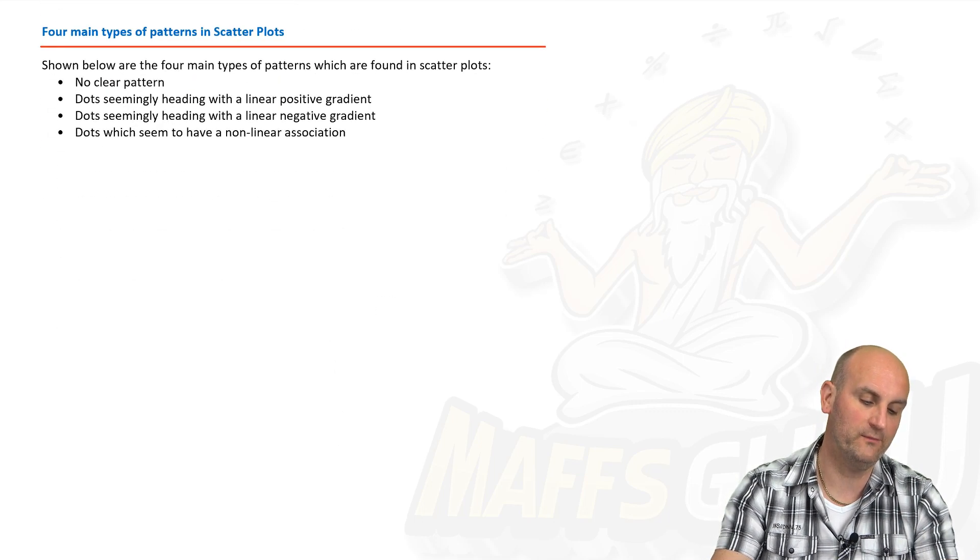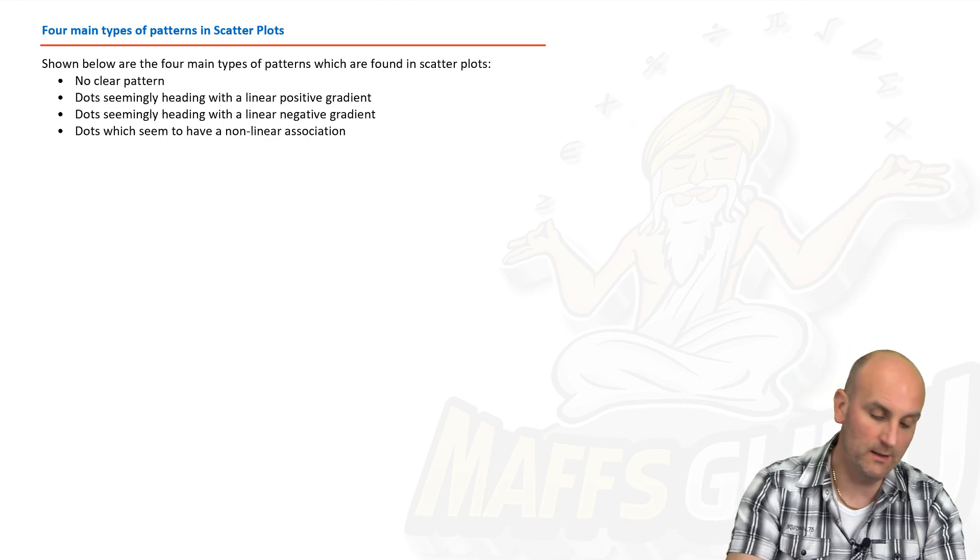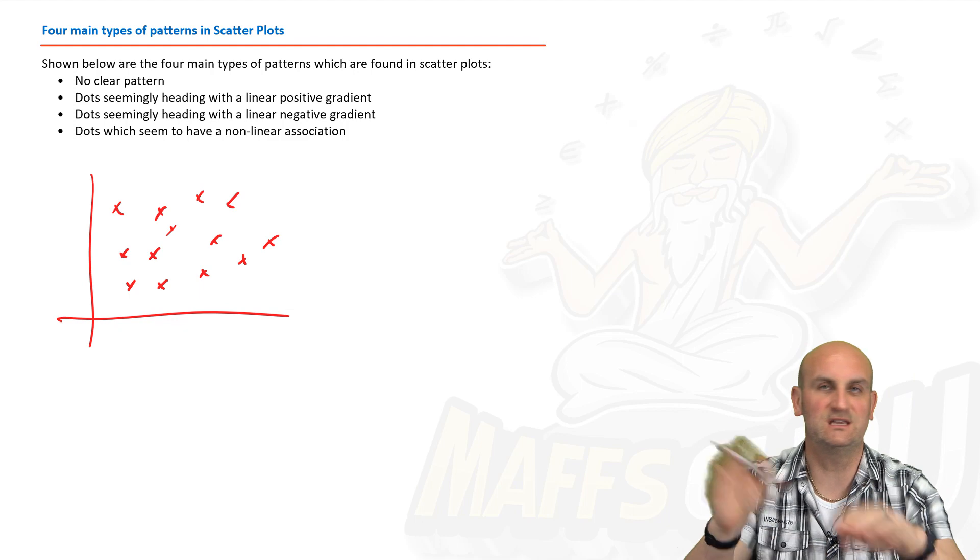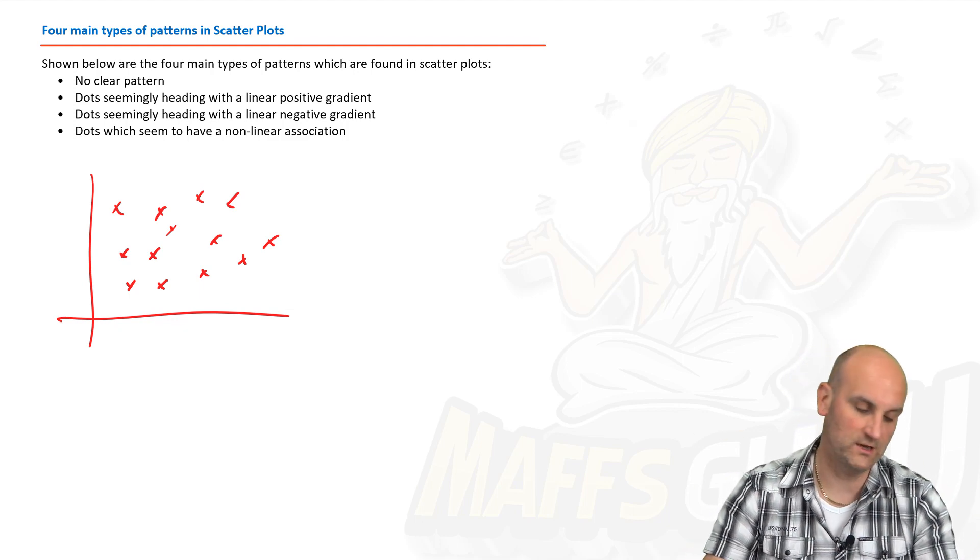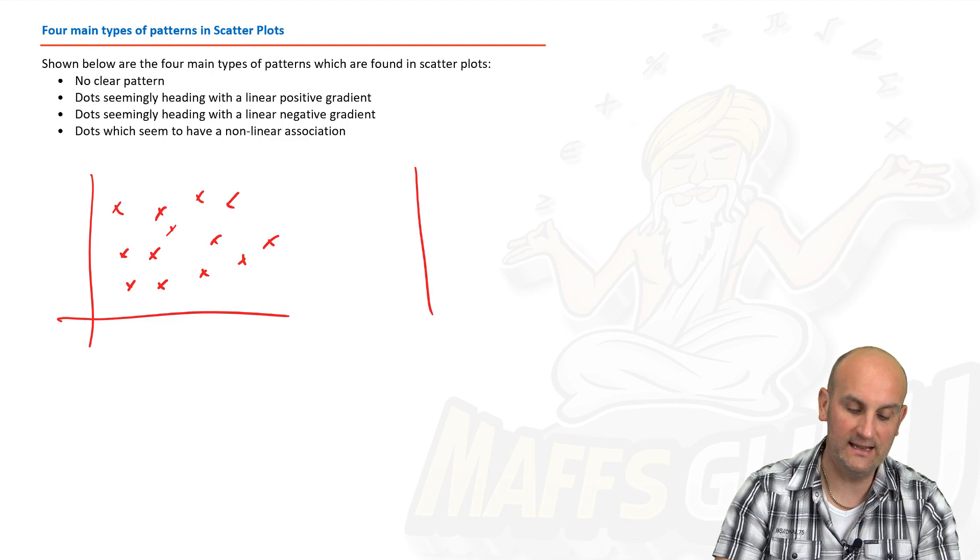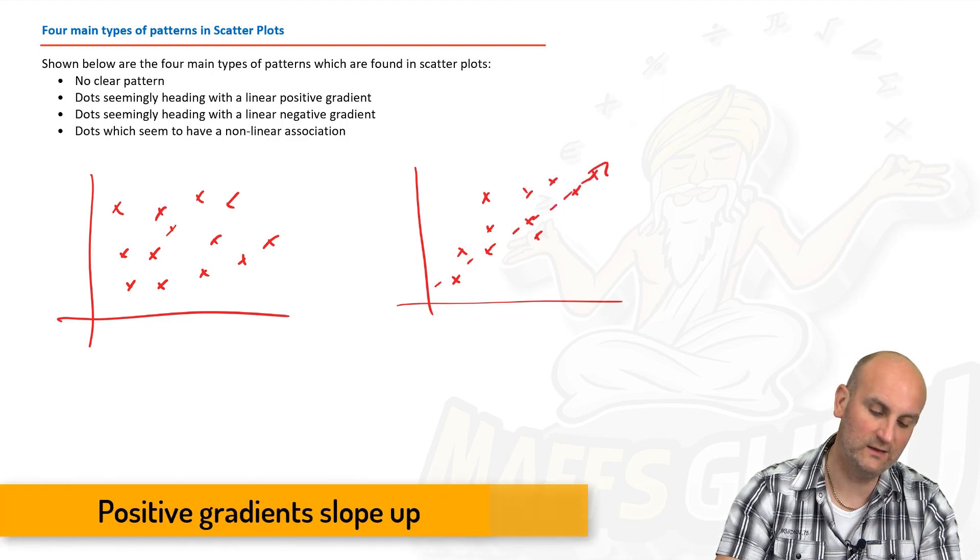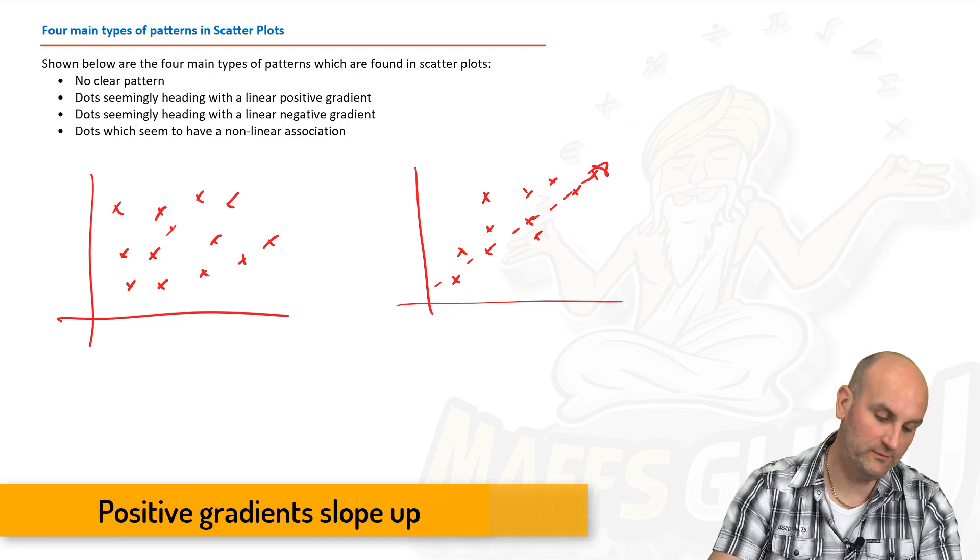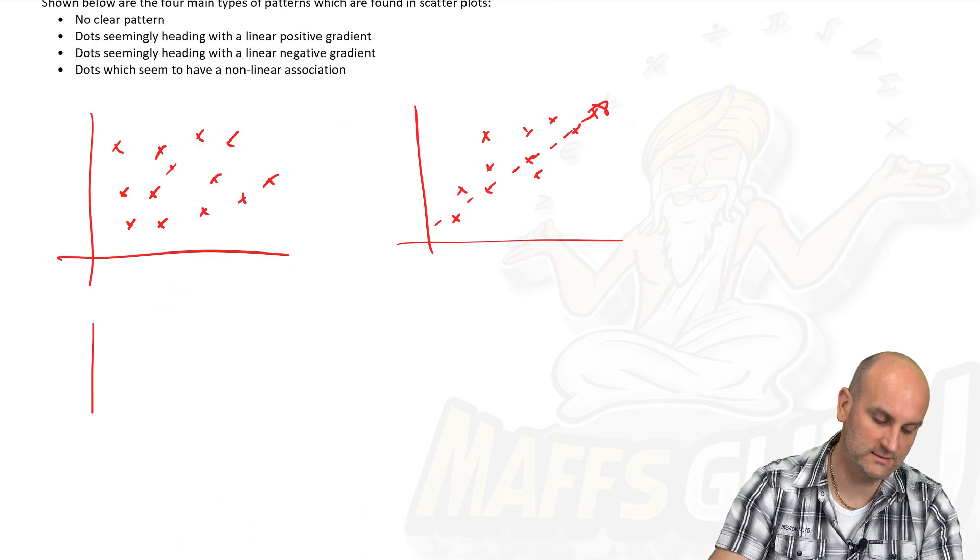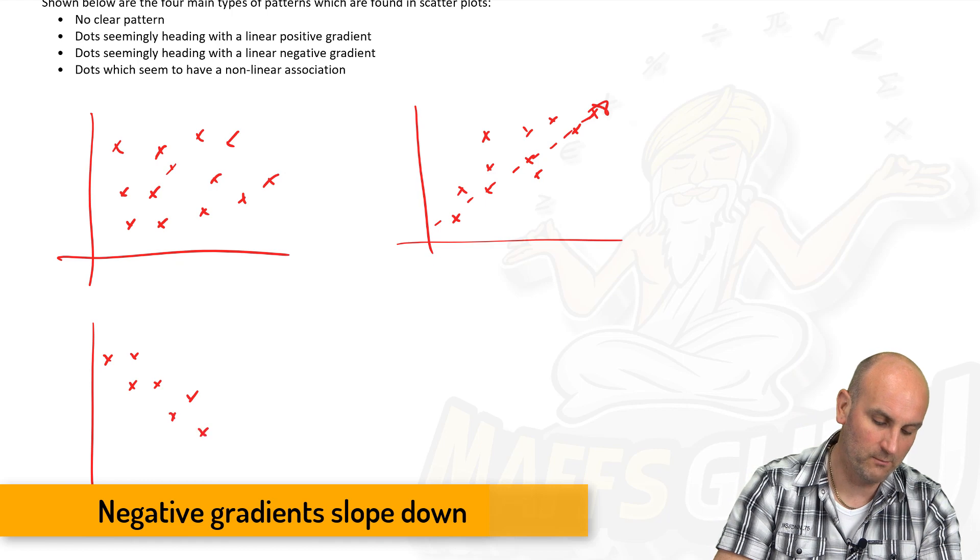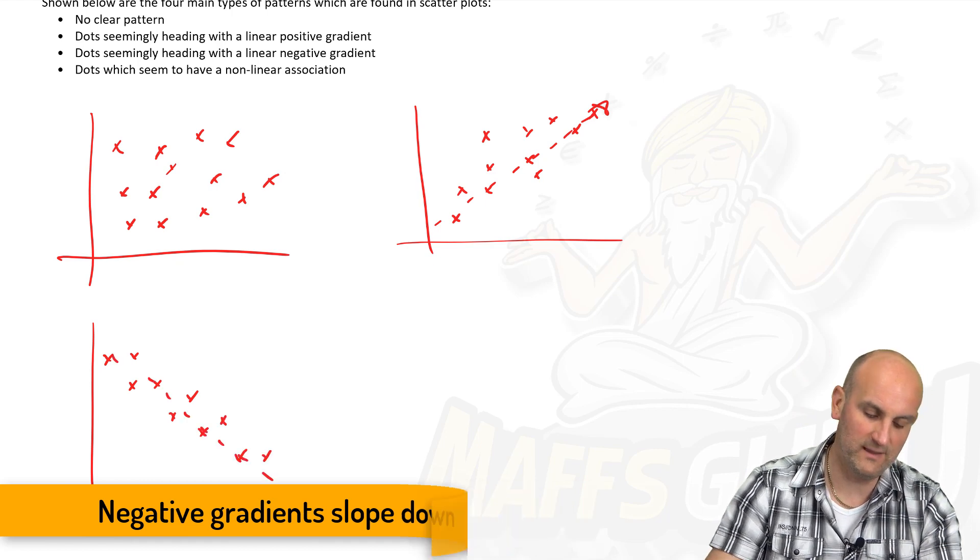We've drawn some scatterplots. We're now going to look at describing them. There are four main types of patterns in scatterplots. Number one, no clear pattern. That is where the kisses are quite literally all over the place. It's like my eight-month-old daughter had just put loads of kisses all over a page. There's no pattern to that whatsoever. Dots seem to be heading with a linear positive gradient. Now, we know that gradient, because we've been dealing with this previously, is where a positive gradient is where, effectively, it seems to be sloping up. Dots seem to be heading with a linear negative gradient. So linear again. What does the word linear mean? Line. So linear negative gradient would suggest that my points are in some sort of line, this time heading down.